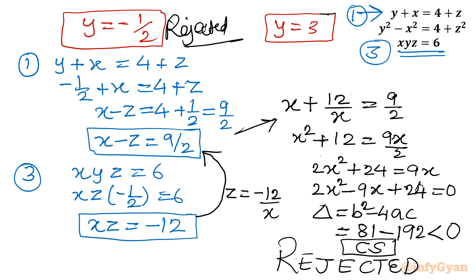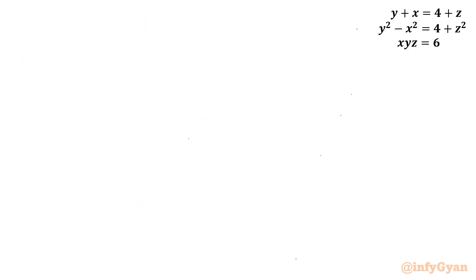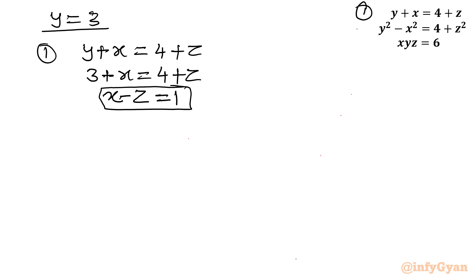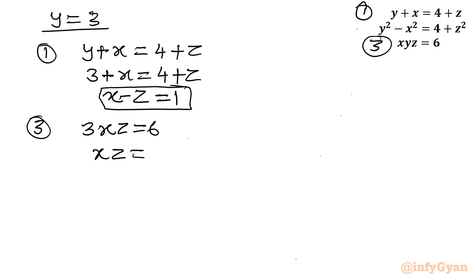Now we take up the case y equals 3. Substituting into equation 1: 3 plus x equals 4 plus z, so x minus z equals 1. Moving to equation 3 with y equals 3: 3 times xz equals 6, therefore xz equals 2.